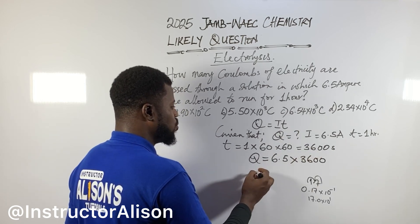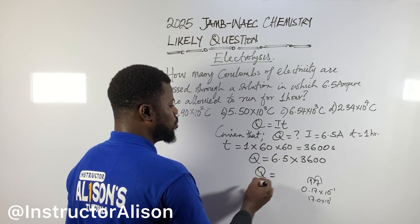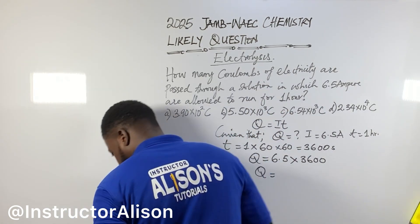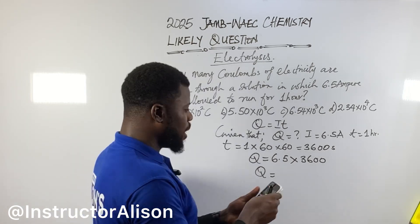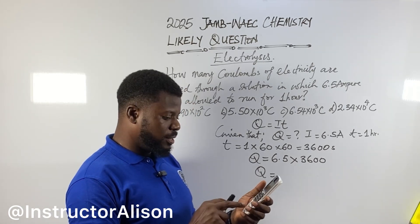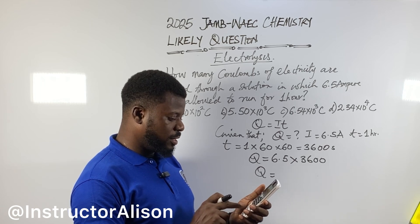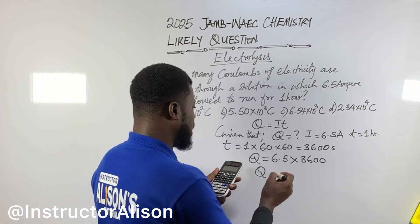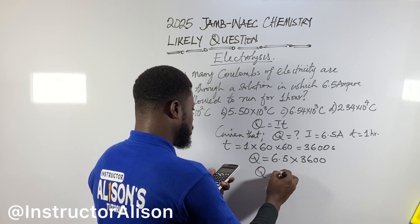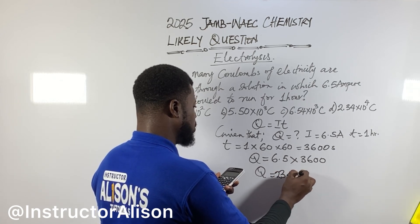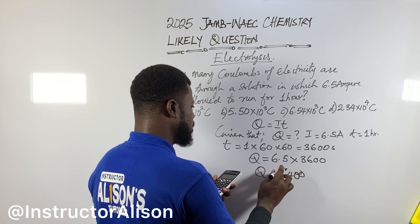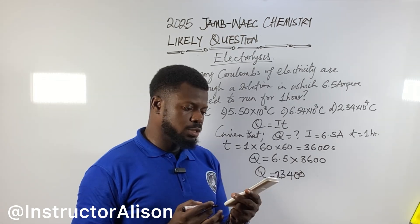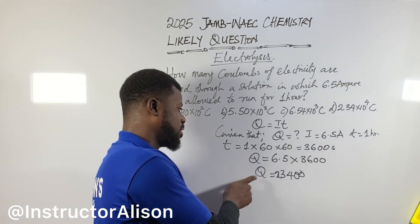Bring out your calculator, let me do the math. Be quick. Q will be equal to, bring calculator out. Okay, see my calculator. Let me punch in 6.5 times 3600. Wait till it gives us the answer. Now, 23,400. That's the answer it gives me. 23,400 coulombs. But the problem now, go back to the options.